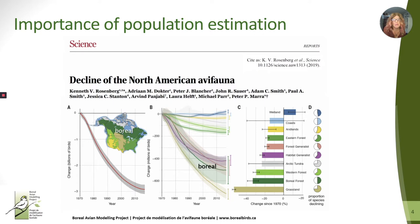Speaking of trends, everyone has probably heard about the paper in Science led by Ken Rosenberg and other Partners in Flight members. There's nothing new about bird declines, but what was new about this paper was that the authors combined abundance and trend estimates to put a number on bird loss, which is all of a sudden very powerful. The paper estimated that 3 billion birds have been lost over the last 50 years, with the boreal region contributing about half a billion birds to the overall loss.